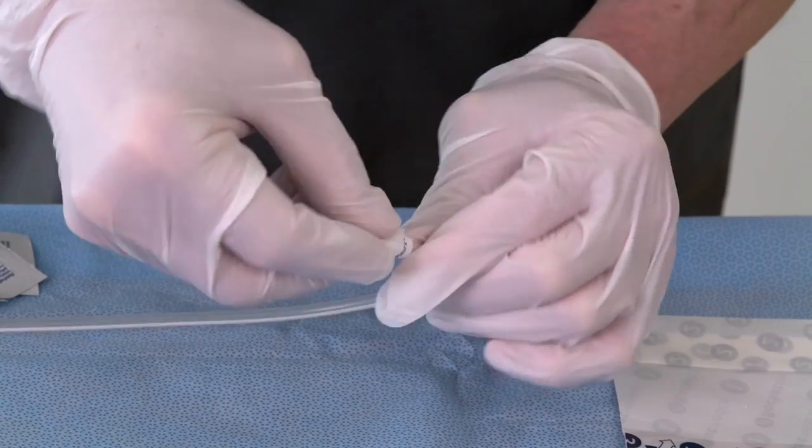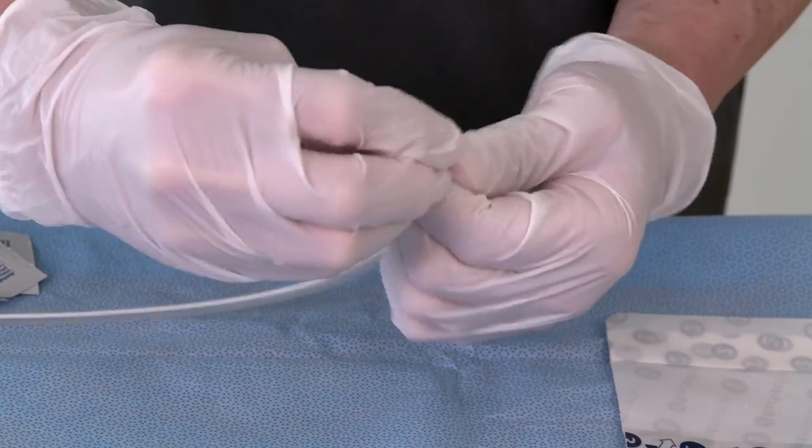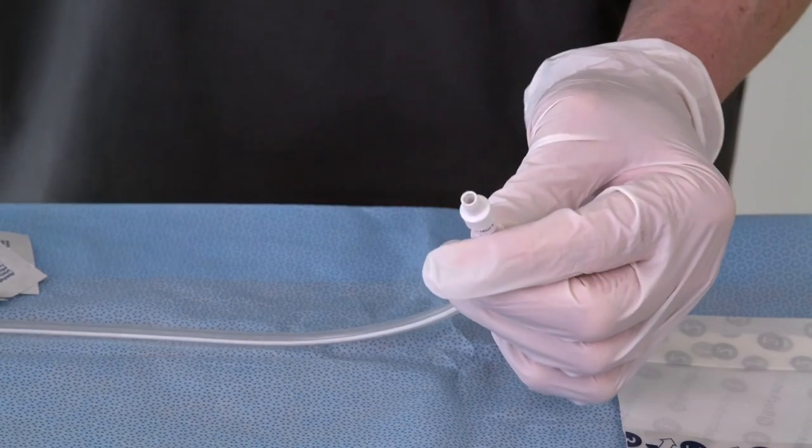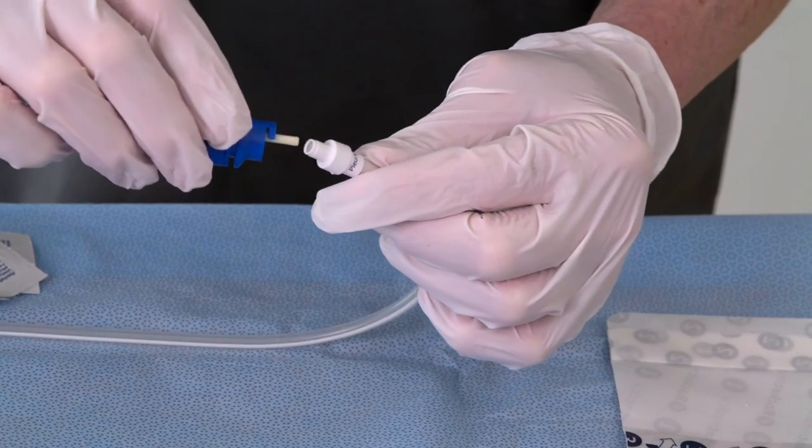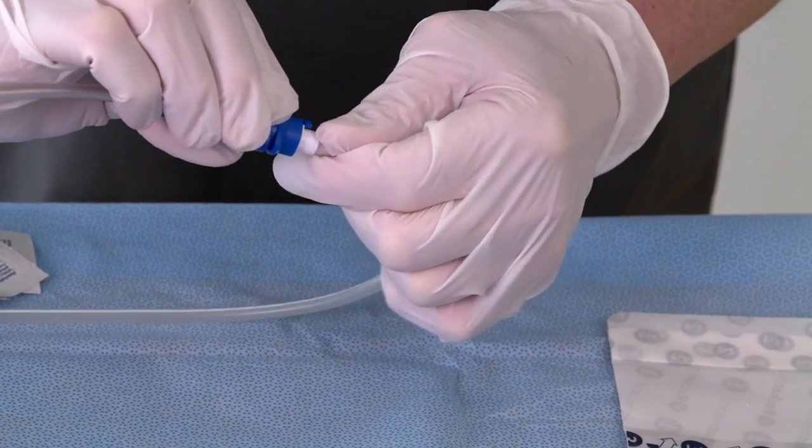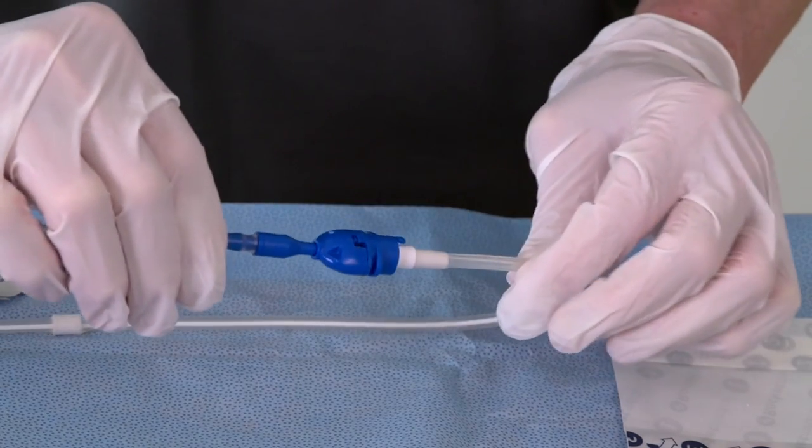Using an alcohol wipe, gently clean around the outside of the catheter valve. Discard the used wipe. Pick up the drainage line of the bottle and gently insert the access tip into the catheter valve. You will feel a slight resistance, which is normal.